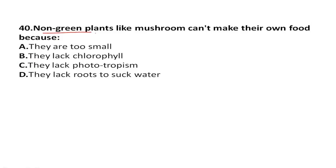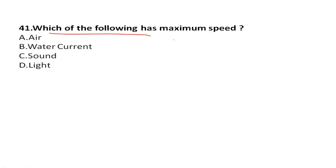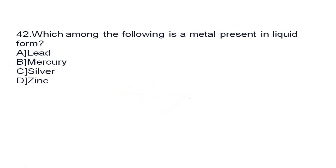Non-green plants like mushrooms can't make their own food because of lack of chlorophyll — mushrooms and other non-green plants have no chlorophyll so they can't make their own food. Which of the following has the maximum speed? It is light — light has maximum speed at three lakh km per second. Which among the following is a metal present in liquid form? It is mercury.